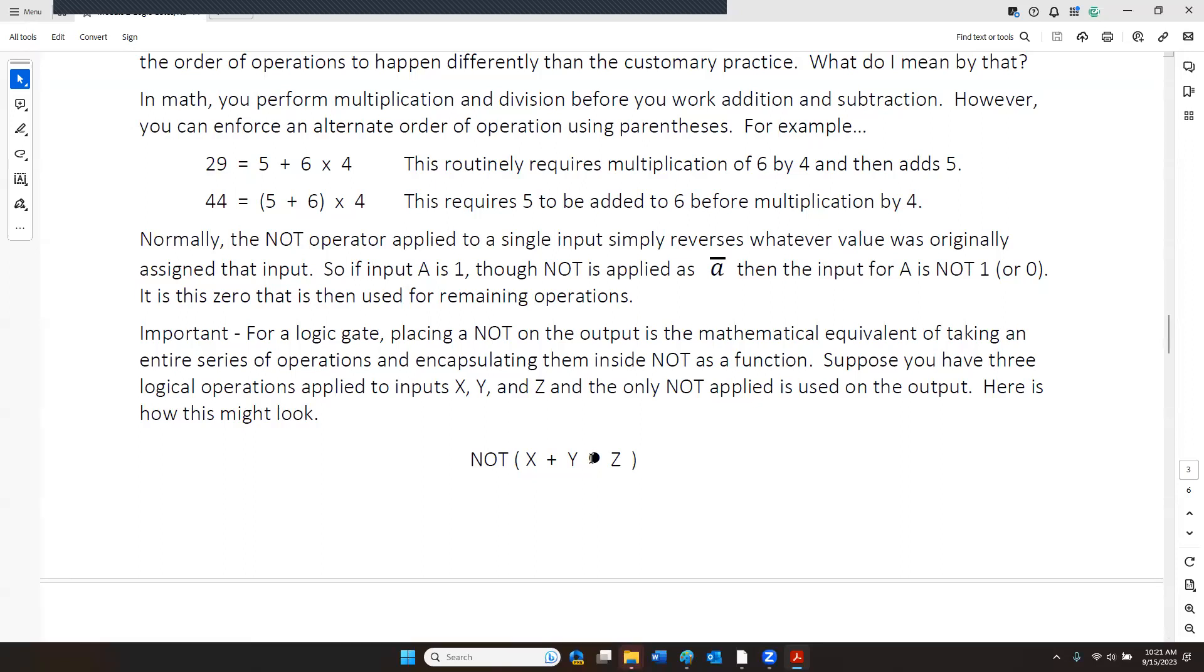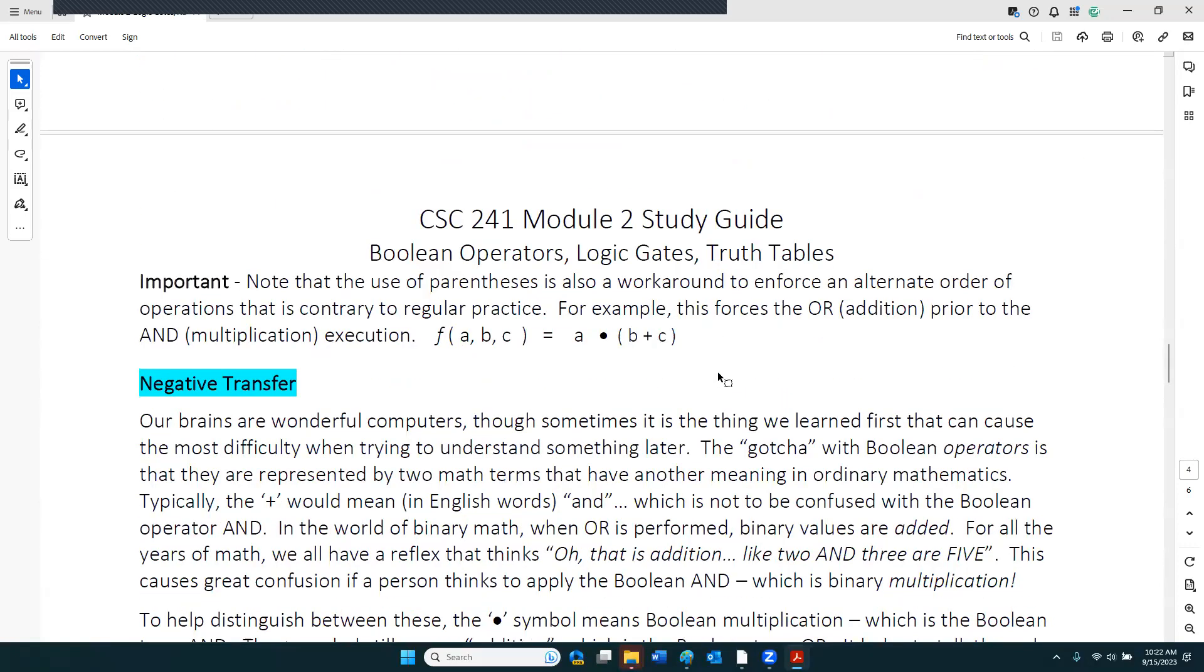We wrapped up on Monday talking about how this Boolean function, which is a combination of Boolean operators, OR with AND, those operators do their thing with the three inputs x, y, and z, and that result is funneled through a NOT operator. Whatever the result is from in here, once that's performed, the output is flipped. If it was a one coming out, it's now a zero. If it was a zero, it's a one. Does this ring a bell from Monday?